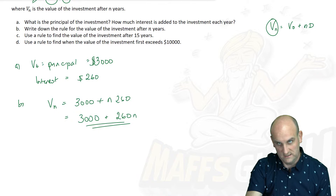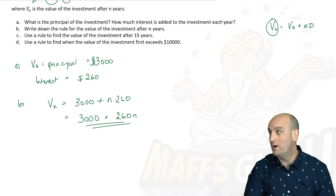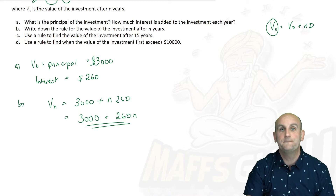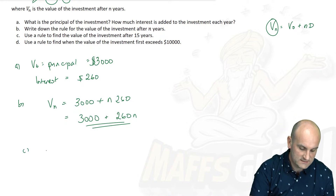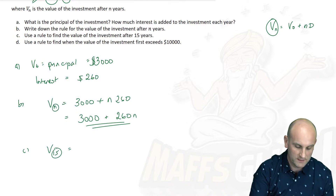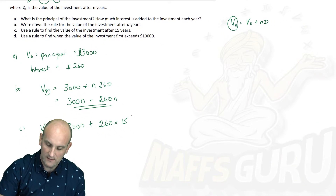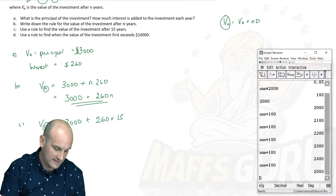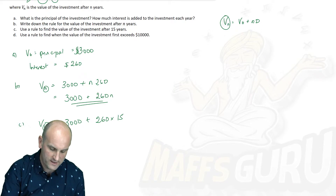Part C: use the rule to find the value of the investment after 15 years. They're telling you N = 15, so find V(15). I'm changing N to 15: V(15) = $3,000 + $260 × 15. Using my CAS: 3,000 + 260 × 15 gives me $6,900.